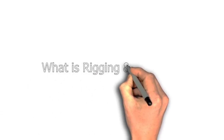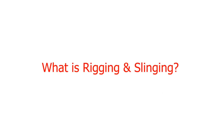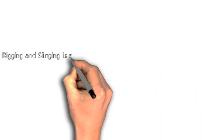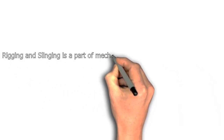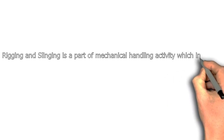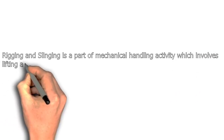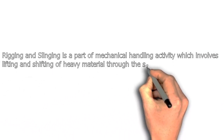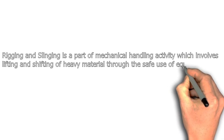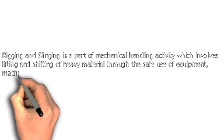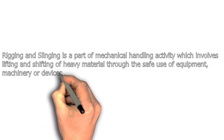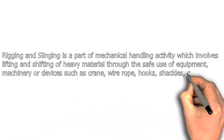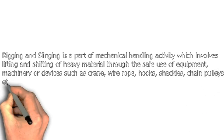What is rigging and slinging? Rigging and slinging is a part of mechanical handling activity which involves lifting and shifting of heavy materials through the safe use of equipment, machinery or devices such as cranes, wire ropes, hooks, shackles, chain pulleys, etc.